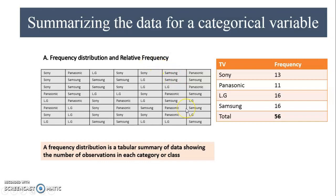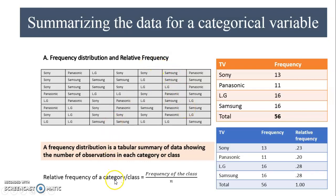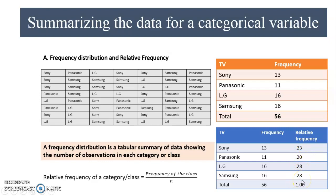There is one more measure: relative frequency. The formula for relative frequency of any category is the frequency of the class divided by N, where N is the number in your sample. For Sony, the frequency is 13 divided by 56, giving 0.23. Panasonic is 0.20 (11 divided by 56), LG is 0.28, and Samsung is 0.28. The total of relative frequencies is always close to 1. For percentage relative frequency distribution, each value is multiplied by 100, giving 23%, 20%, 28%, and 28%.